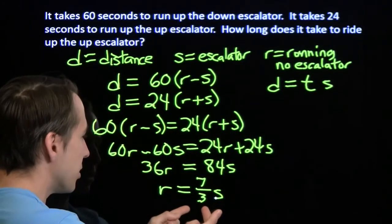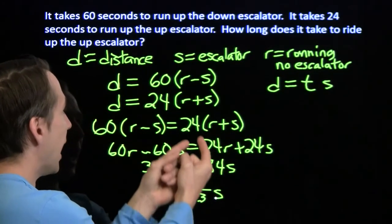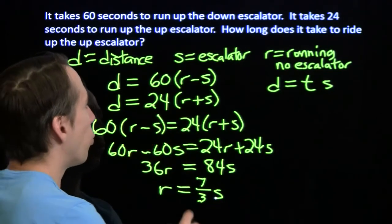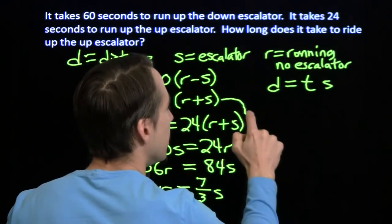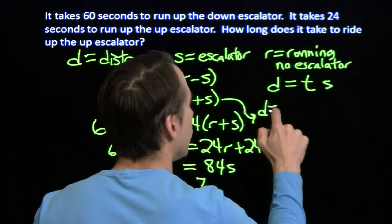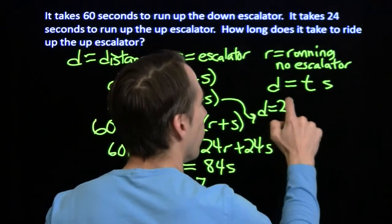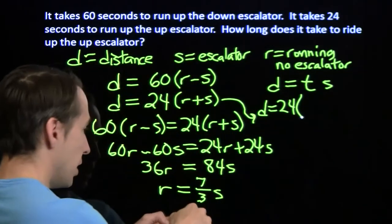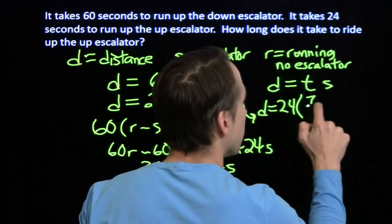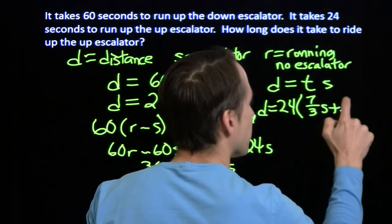So if I can express d in terms of s, I should be able to solve the problem. I can do that. I can put this in right up here. I can take this equation and I have d equals 24 times 7 thirds s plus s.